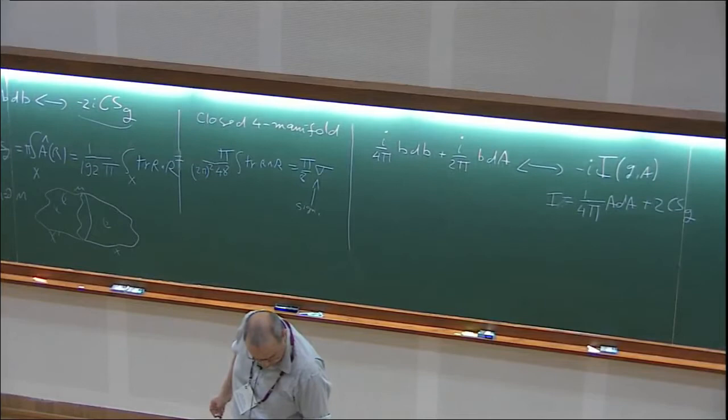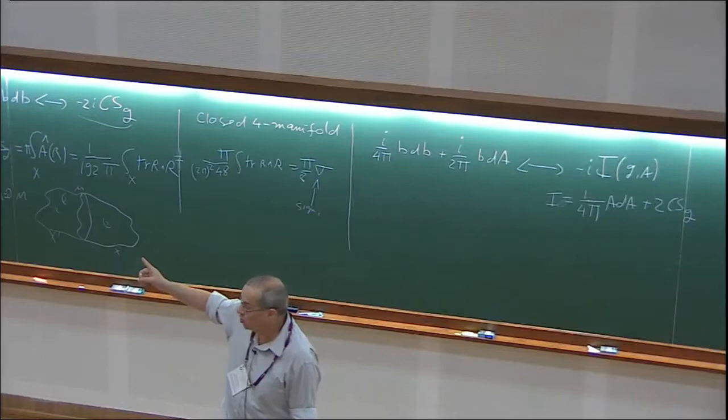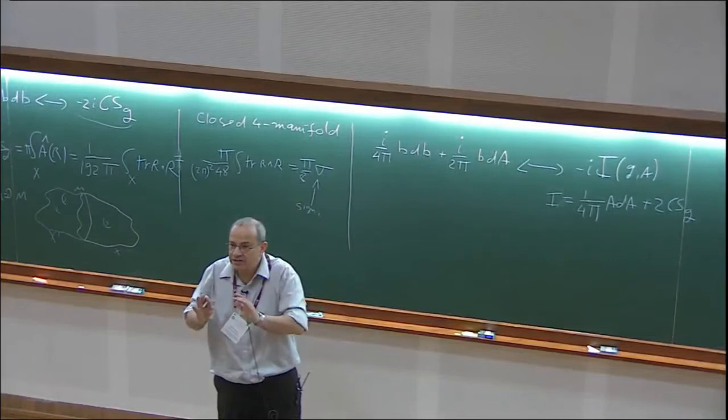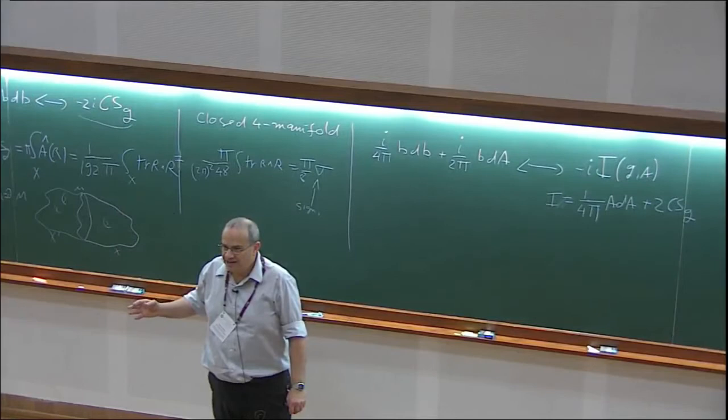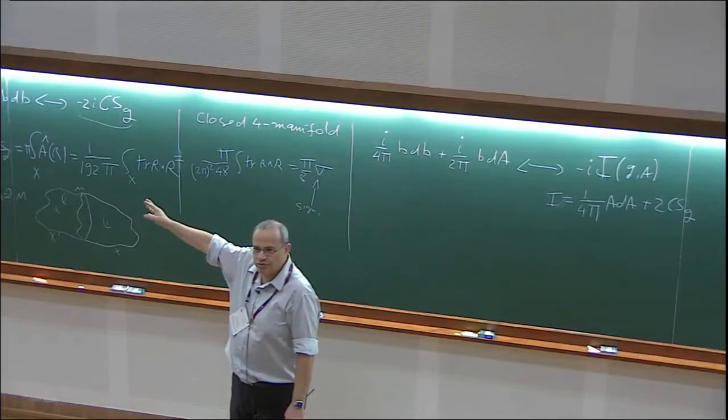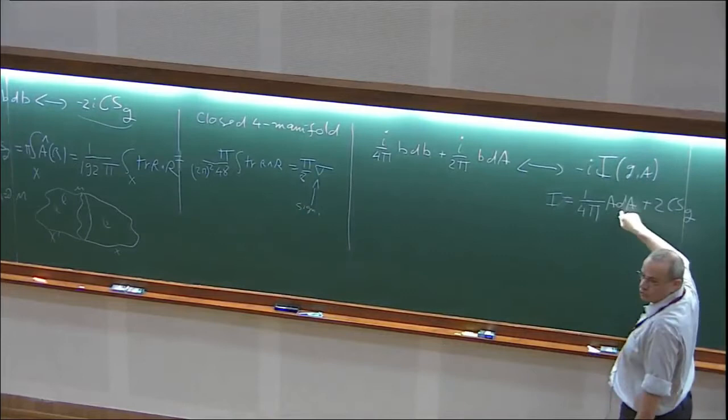This does not even need a choice of spin structure, and this theory is completely trivial. It has no interesting observables. It does not depend on the spin structure. The partition function is completely trivial. More generally, we can write i over 2π B times the uppercase C, where uppercase C is a classical field. Since this theory is completely trivial, we'll learn from that that this classical field C is constrained to be trivial.